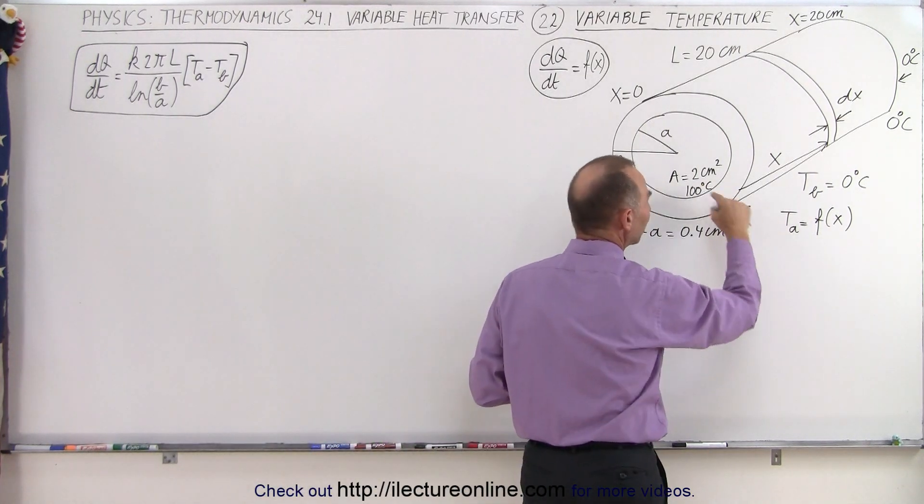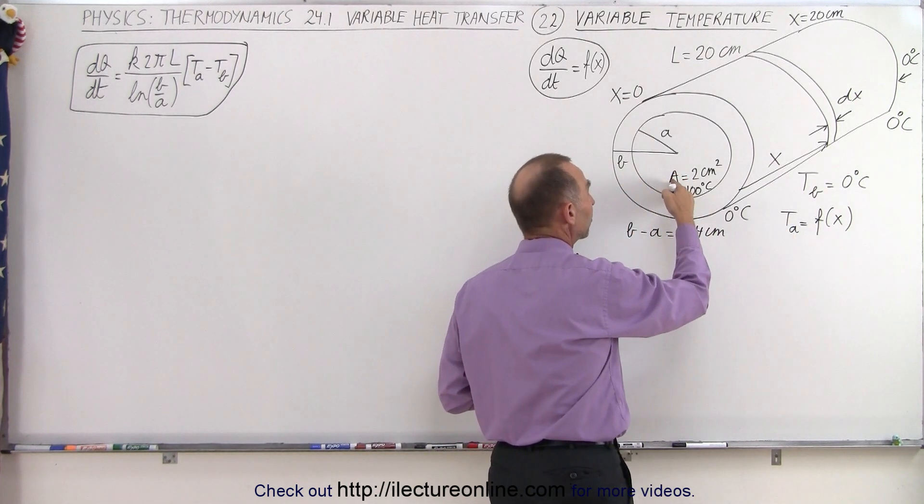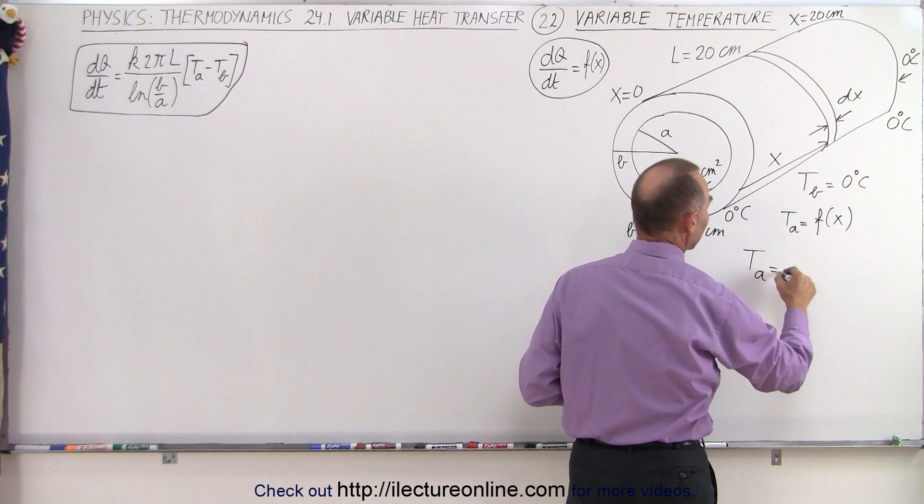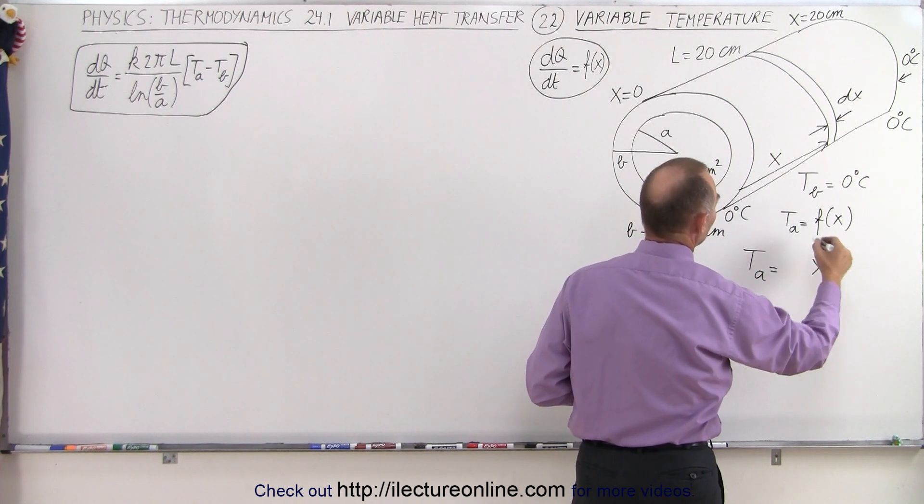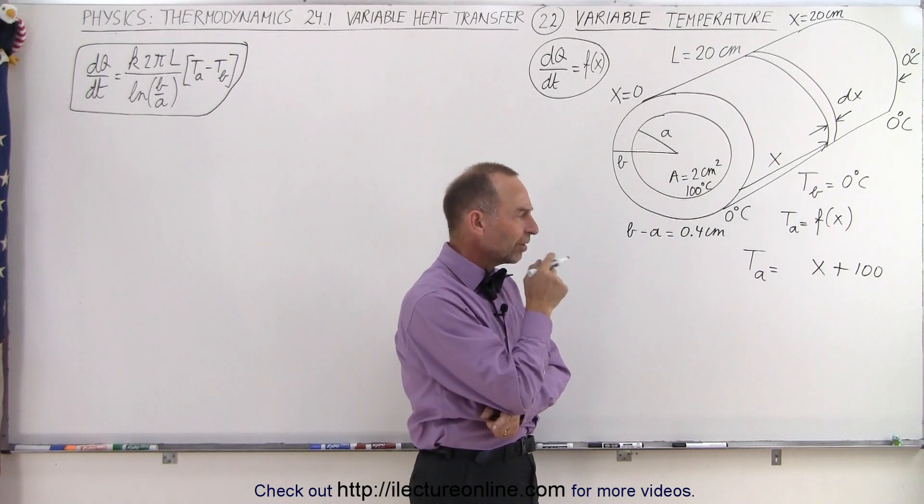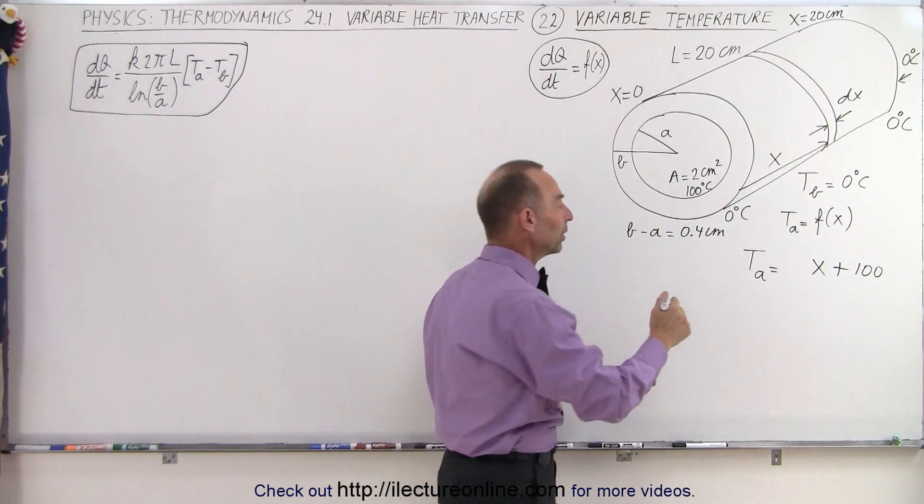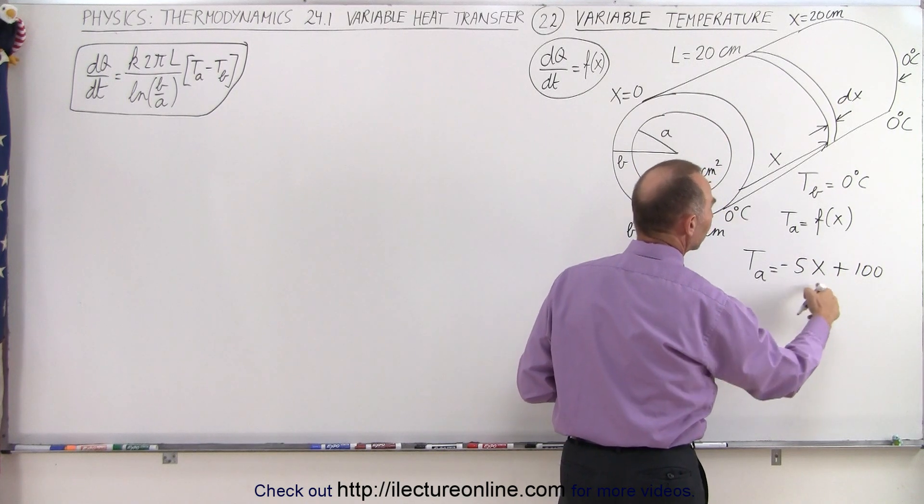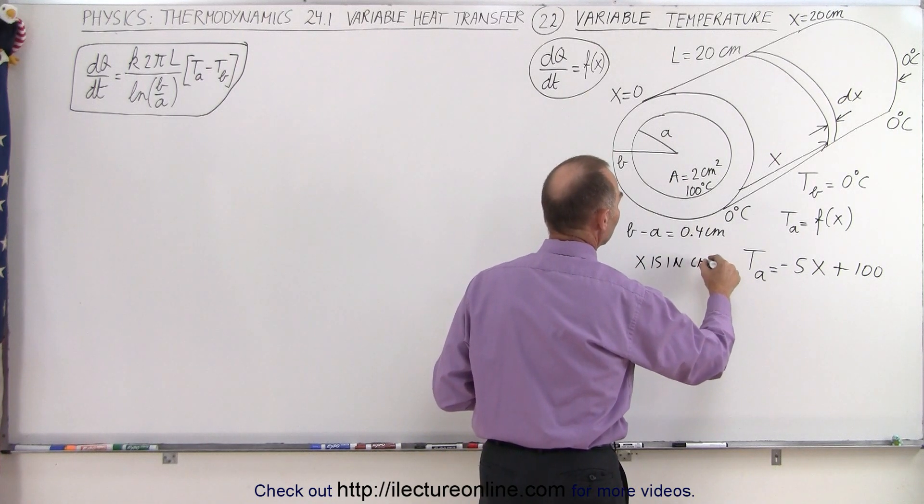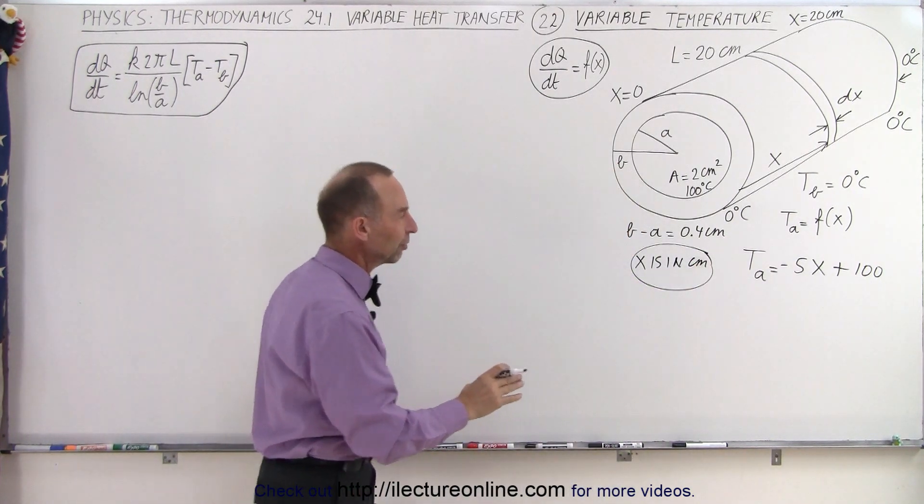We need to somehow express the temperature of the inside as a function of position. On the outside it's easy, it's 0 degrees everywhere, but on the inside it goes from 100 when X equals 0 to 0 when X equals 20 centimeters. So in this case we can say that T as a function of A is equal to some slope times X plus 100. The temperature drops off 100 degrees over a distance of 20 centimeters, that's a negative 100 divided by 20, or a negative 5. So it's negative 5X plus 100 when the X is in centimeters. So now we have an expression for the inside temperature and an expression for the outside temperature.